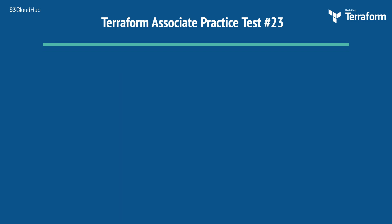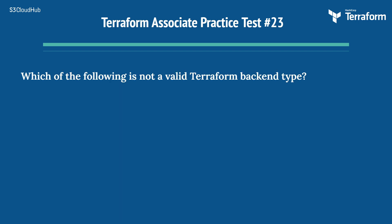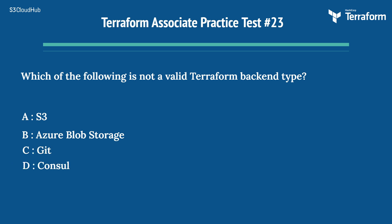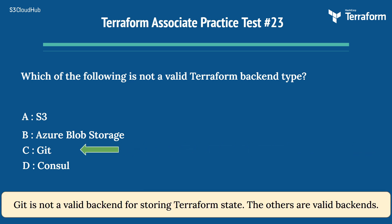The twenty-third question is: which of the following is not a valid Terraform backend type? Option A: S3. Option B: Azure Blob Storage. Option C: Git. Option D: Console. The right answer is Option C: Git. Git is not a valid backend for storing Terraform state; the others are valid backends.